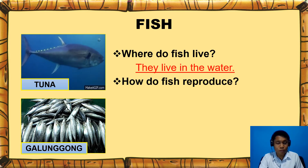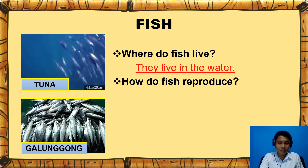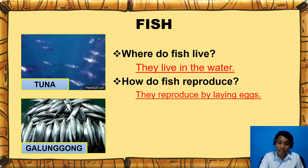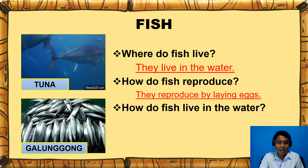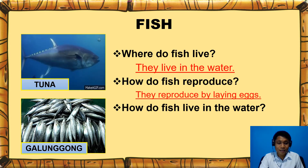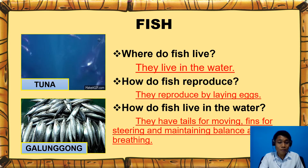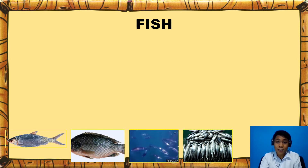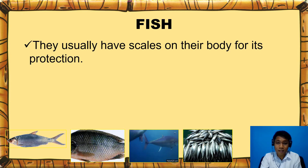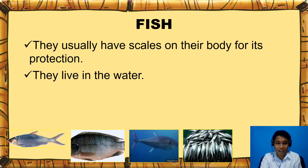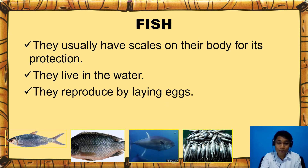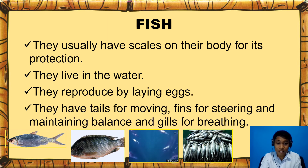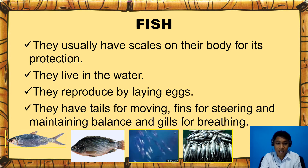And how do fish reproduce? They reproduce by laying eggs. And how do fish live in the water? They have tails for moving, fins for steering and maintaining balance, and gills for breathing. Always remember that fish usually have scales on their body for protection, they live in the water, reproduce by laying eggs, and have tails, fins, and gills.